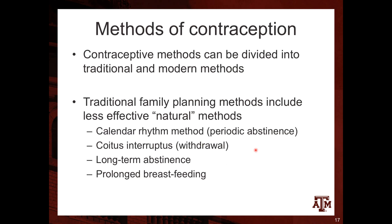Contraceptive methods can be divided into traditional and modern methods. Traditional family planning methods include less effective natural methods such as periodic abstinence, withdrawal, long-term abstinence, and prolonged breastfeeding. These are considered traditional family planning methods, which are usually less effective than modern methods.